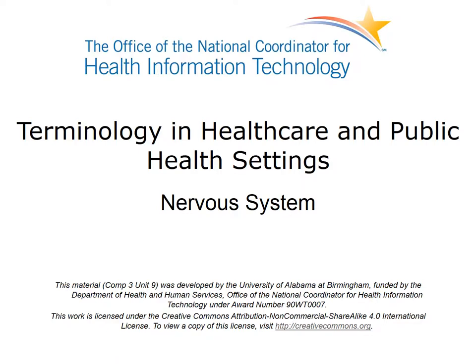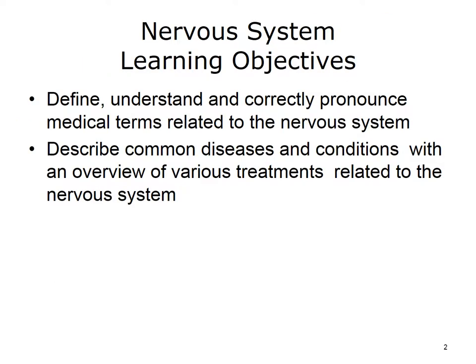Welcome to Terminology in Health Care and Public Health Settings: the Nervous System. In this unit, we will review the nervous system. The objectives for this unit are to define, understand, and correctly pronounce medical terms related to the nervous system, and to describe common diseases and conditions with an overview of various treatments related to the nervous system.